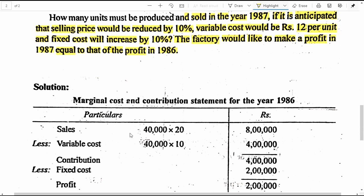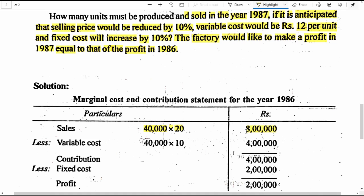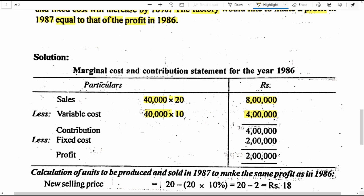Sales: 40,000 units into 20 rupees selling price gives a total sales of 8 lakh rupees. From which we subtract the variable cost: 40,000 units into 10 rupees gives 4 lakh rupees. 8 lakh minus 4 lakh gives a contribution of 4 lakh rupees. From contribution, the fixed cost of 2 lakh rupees is subtracted, giving us a profit of 2 lakh rupees in the current year 1986.